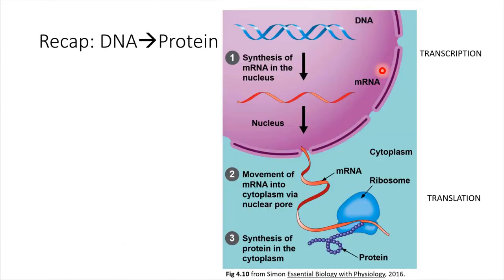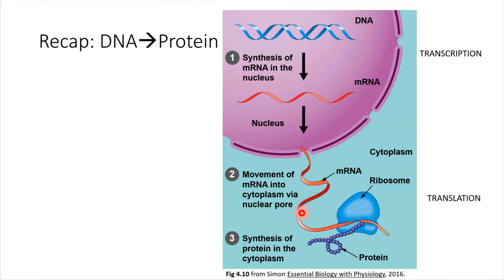That was a lot of information, so let's recap. DNA is stored in the nucleus. To express a gene, the end result is making a protein — each gene encodes one protein. We start with DNA, transcribe the gene into a molecule of mRNA — that process is called transcription. The mRNA slides out through a nuclear pore into the cytoplasm and finds a ribosome. The ribosome reads the sequence of nucleotides and connects amino acids together to build the final protein product.